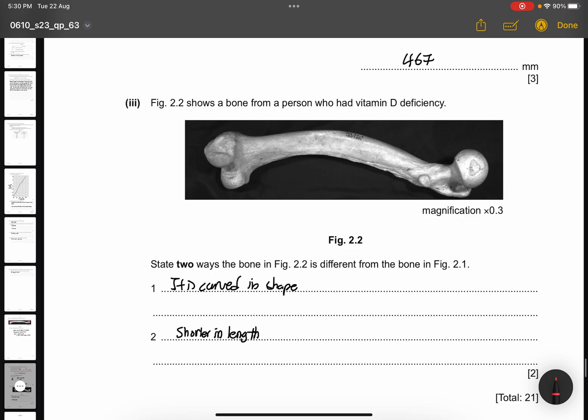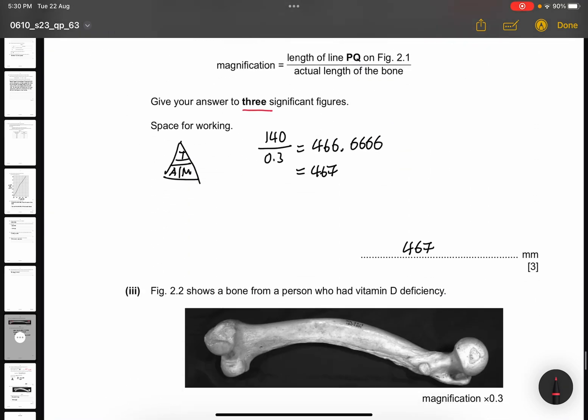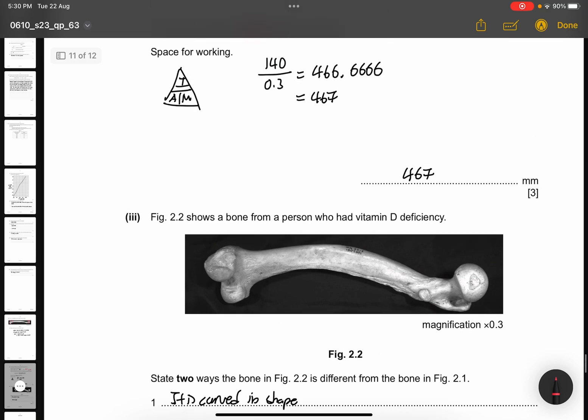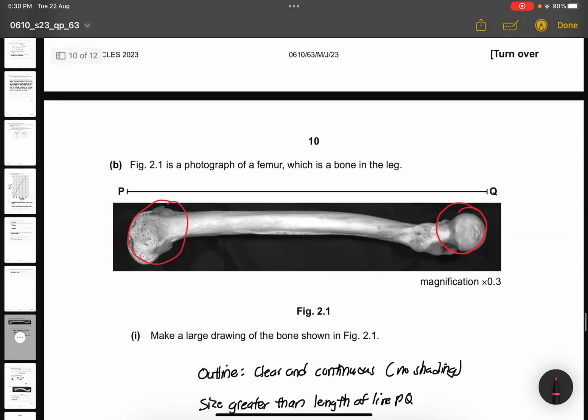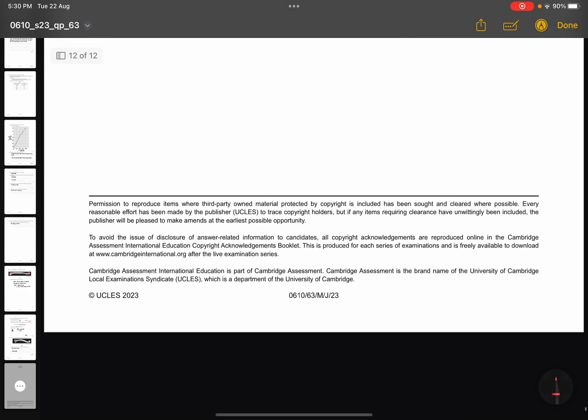Part 3. Figure 2.2 shows a bone from a person who had vitamin D deficiency. State 2 ways that the bone in figure 2.2 is different from the bone in figure 2.1. So, you can see that in this diagram, it's straight and this one is curved in shape. And you can see that this one is long and in figure 2.2, it's shorter in length. So, that is how you make a comparison.